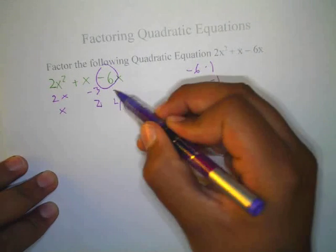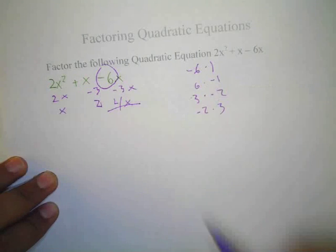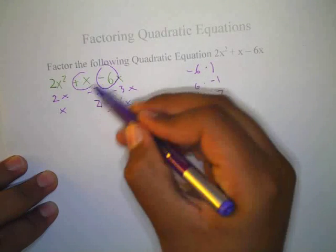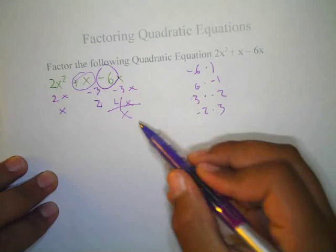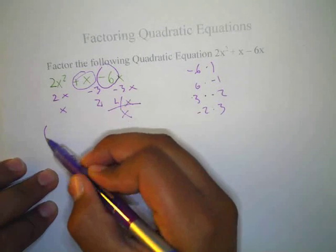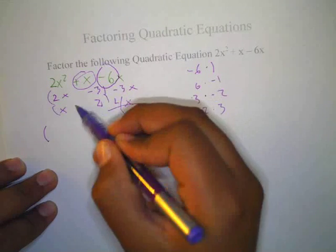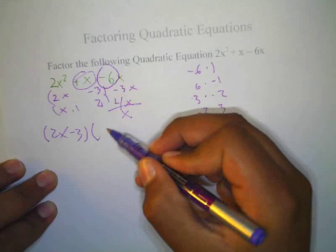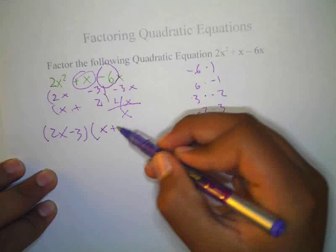x times negative 3 is negative 3x. When you add there, we have right here... 2x minus 3 times x plus 2.